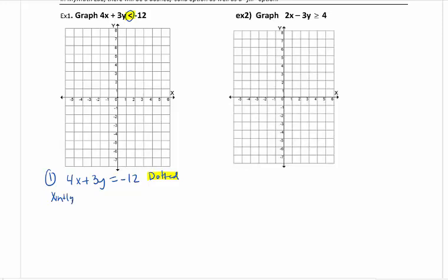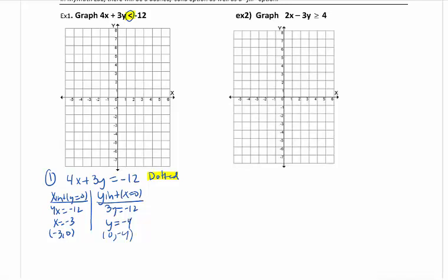So I'm going to find my x-intercept first. Plug in y equals 0, and that means I'll get 4x equals negative 12. So I get x equals negative 3. My y-intercept, plug in x equals 0. I get 3y equals negative 12, y equals negative 4. So I get the point 0, negative 4. So I'm going to plot these two points. I've got negative 3, 0, and I have 0, negative 4. And this is a dotted line.